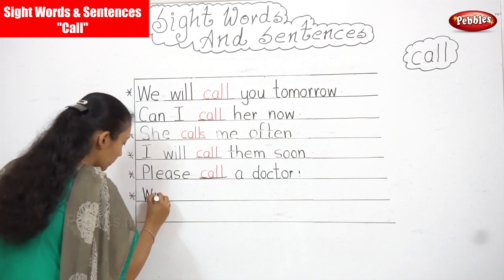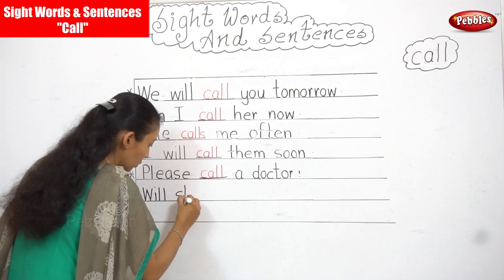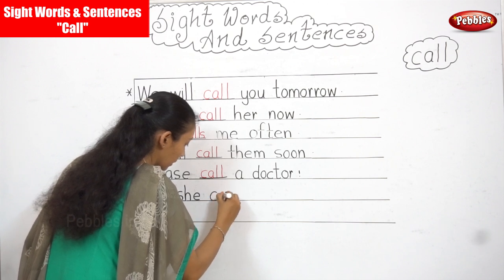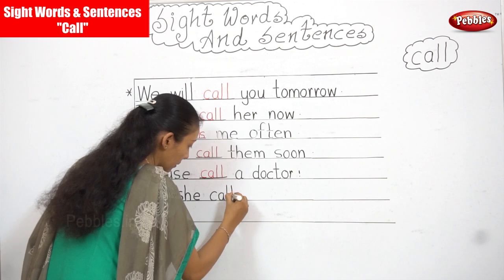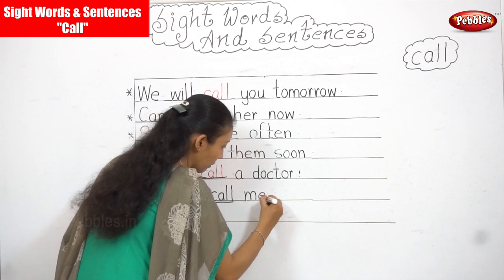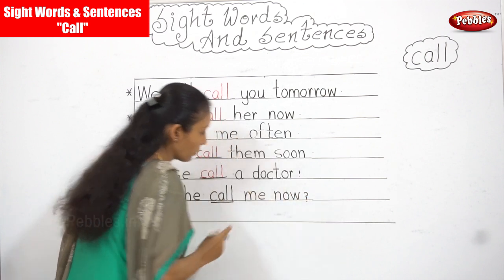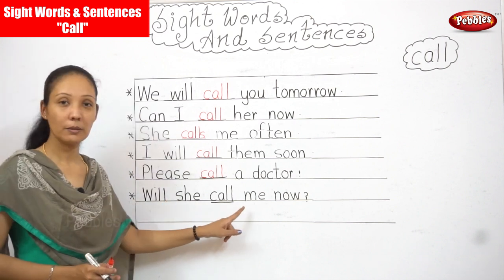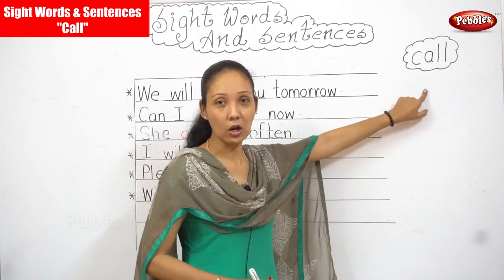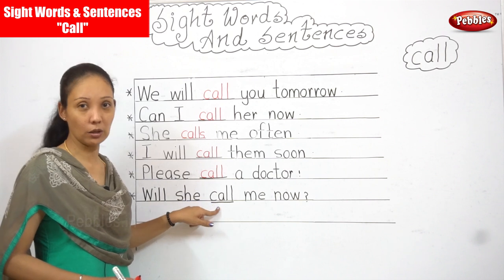One more last sentence: Will she call me now? It's a question, so I'm giving a question mark. Will she call me now? So now in these sentences, you have used the word that you learned — 'call.' Wherever you see 'call,' you're able to recognize the word 'call.'